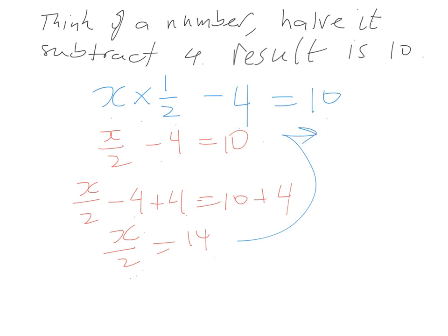So, what we're going to do over here, we've got X over 2. We're going to multiply that by 2. That equals 14. We've also got to multiply that by 2. So, 2 times 1 half just gives us 1 whole, X equals 14 times 2, which is 28. And that's what we end up with.